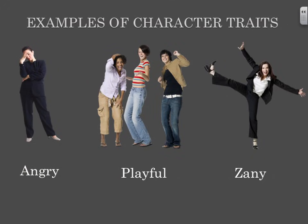If a character is constantly upset at their friend in a novel you are reading, you could determine that the character is angry. If a group of girls in a novel are constantly having fun, dancing and laughing, you might say the characters are playful. If a woman in a novel is doing the most outrageous and funny things, then you might say she is zany. These are examples of character traits.